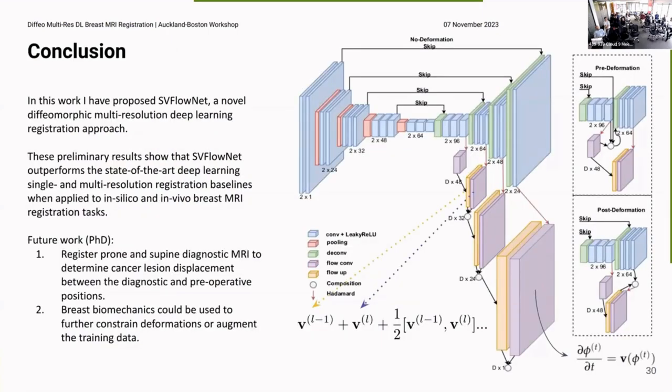So in conclusion, this work has presented SVFlowNet. It's a novel diffeomorphic multi-resolution deep learning approach. These are preliminary results that show that this architecture outperforms the multi-resolution approach on in silico and in vivo datasets. Future work during my PhD, which just started, I'm going to register prone and supine diagnostic MRI to determine tumor localization displacement between diagnostic and preoperative positions and integrate breast biomechanics into these techniques, either as a loss function or to augment the training data. Thank you.